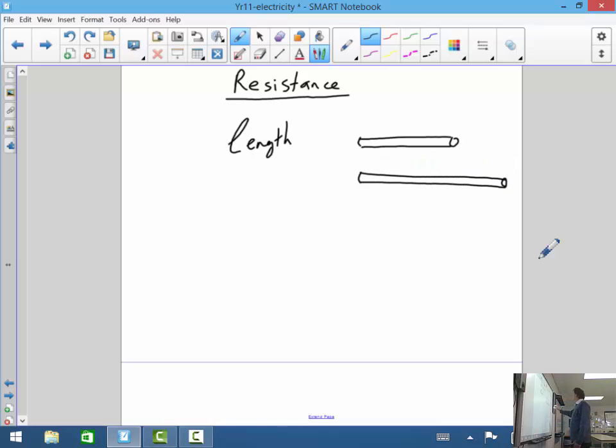So for the same material and the same thickness and area of cross-section, you would expect a longer wire to have more resistance, resisting electricity more or the electrical current. So it turns out that the resistance is actually proportional to the length.